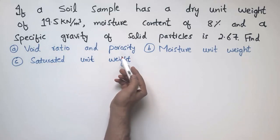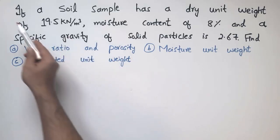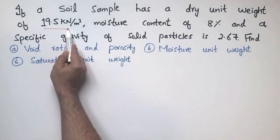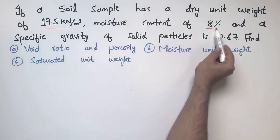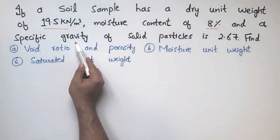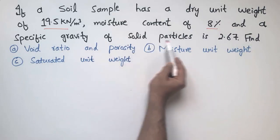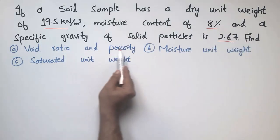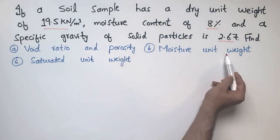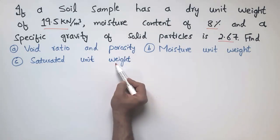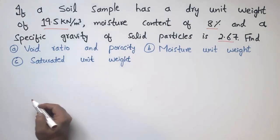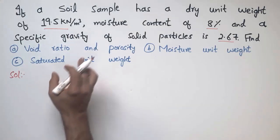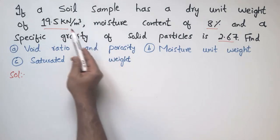The problem states: if a soil sample has a dry unit weight of 19.5 kilonewton per cubic meter, a moisture content of 8%, and a specific gravity of solid particles of 2.67, then find the void ratio and porosity of the soil, the moisture unit weight, and the saturated unit weight of the soil sample.